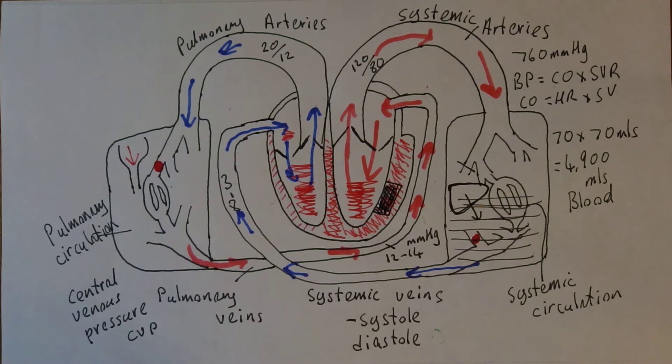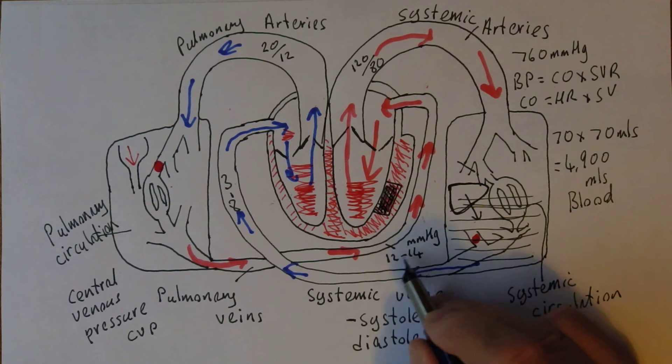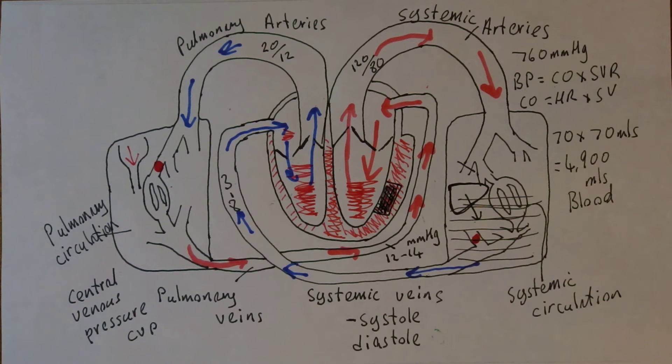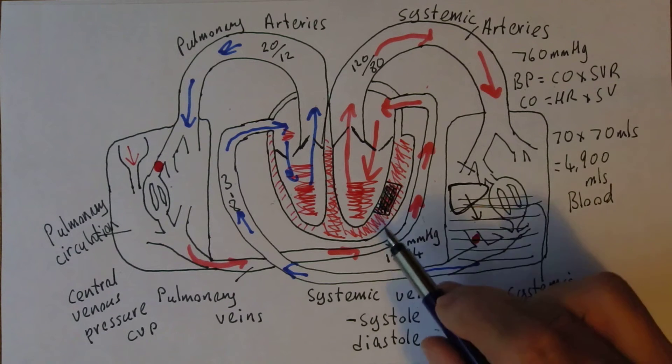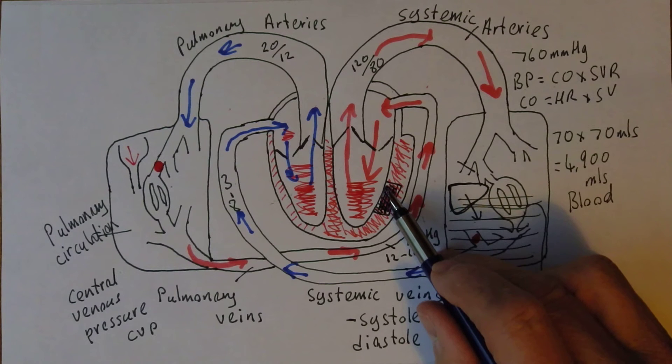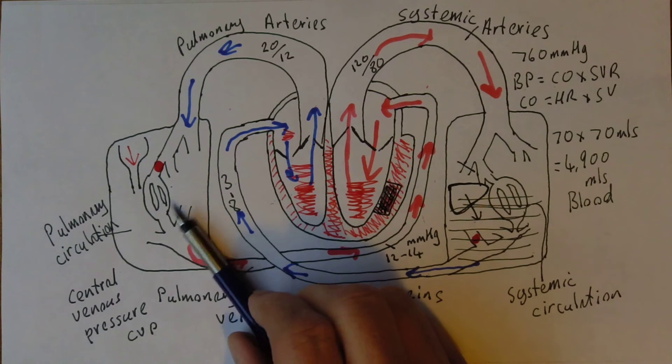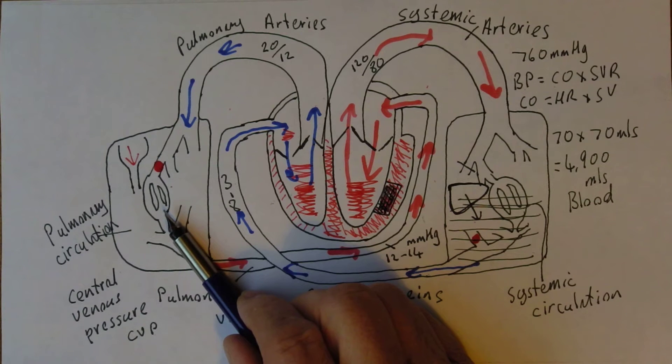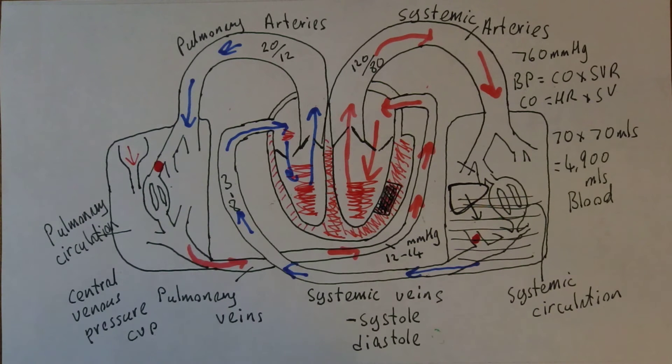Now the normal pressure is supposed to be about 12 to 14 millimeters of mercury. If the back pressure rises due to left ventricular failure or valvular failure in the pulmonary vessels, if the pressure rises to about 20 millimeters of mercury you'll start to get interstitial oedema. If the pressure rises to about 25 millimeters of mercury then pulmonary oedema will start to develop.